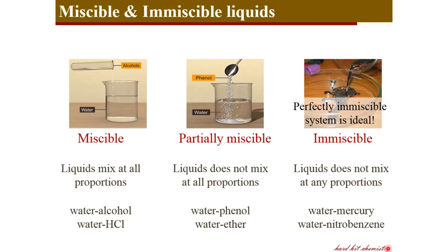Even if we say mercury is immiscible in water, you can see some amount — a very, very small fraction — of mercury in the water phase. So this covers the three kinds of binary liquid systems based on miscibility.